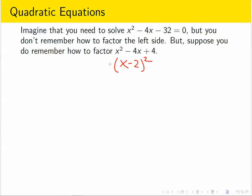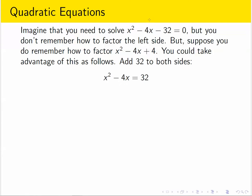So what I want to do is take advantage of that by rewriting this equation so the left side is this perfect square. What I could do is start by moving the 32 over by adding it to both sides, and then add another 4 to both sides.